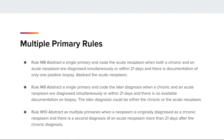Rule M9 states that the later diagnosis could be either the chronic or the acute neoplasm, and note one in that rule tells us that the two diagnoses are likely the result of an ongoing diagnostic workup. If rules M8 and M9 do not apply, then we look at rule M10, which tells us to abstract multiple primaries. This is the first rule that talks about the two neoplasms being more than 21 days apart. If the case has a presence of multiple plasmacytomas, this is a diagnosis of multiple myeloma, and the heme database goes into further detail.